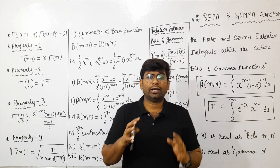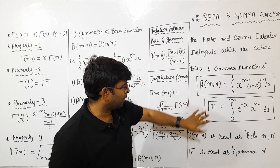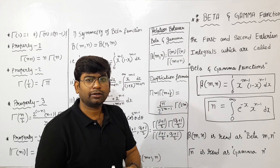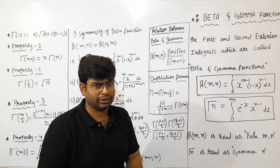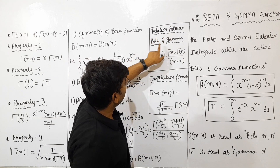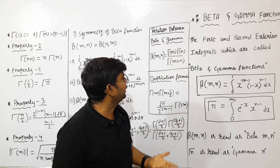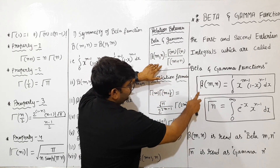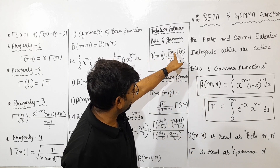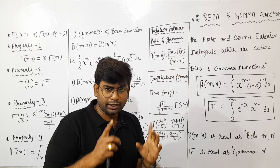Gamma(n) is the integration from 0 to infinity of e to the power of minus x, into x to the power of n minus 1 dx. The most common thing here is the relation between Beta and Gamma. Let's look at the relation between Beta and Gamma — if you have two multiplications, then you have their addition.